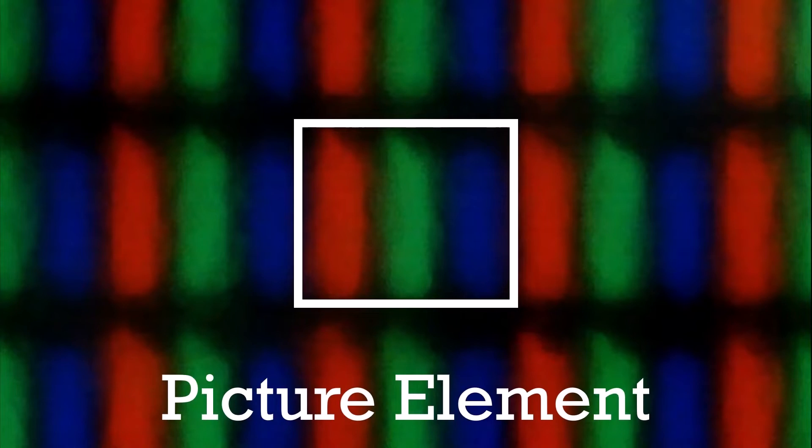Each of the little colored rectangles is called a sub-pixel, and a red, green, and blue sub-pixel, in that order, form one picture element. More commonly referred to as a pixel. The images on my display are made up of these little pixels, so how do they work?